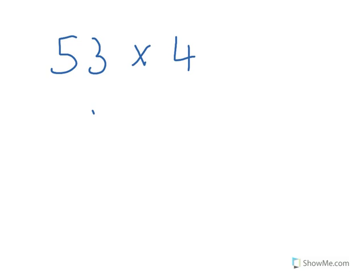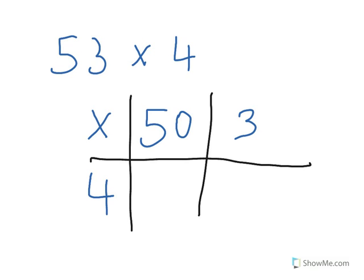First, we replace the times sign on the grid. We then look at 53 and partition it - the 5 is worth 50 and the 3 is worth 3 units or 3 ones. We place the 4 underneath, add our lines using the ruler, and we're ready to start.